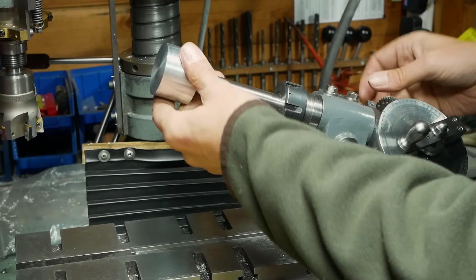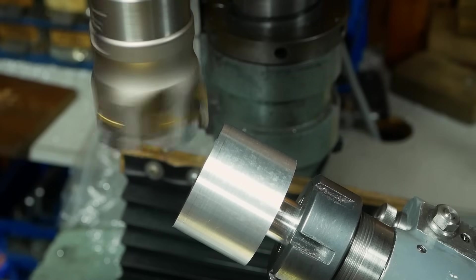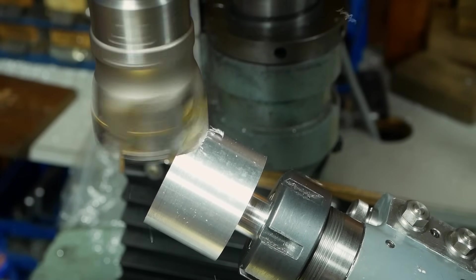It's easiest to machine the platonic solids starting from a simple shape, either a cylinder or a sphere, either of which can be machined on the lathe. These initial shapes provide reference points to take measurements from.